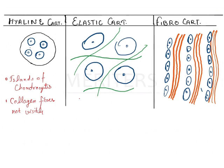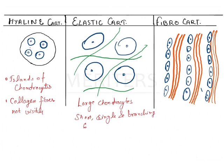In elastic cartilage, the chondrocytes are larger than normal, and you will be able to identify short, single, branching — that is, criss-crossing — elastic fibers. You can see here these large chondrocytes.